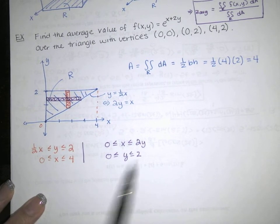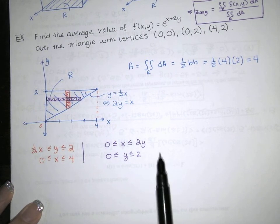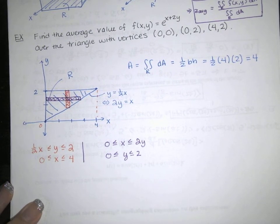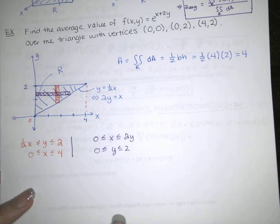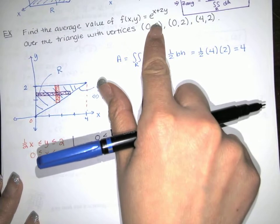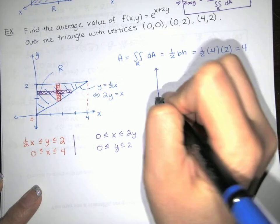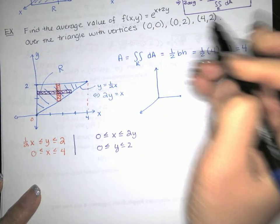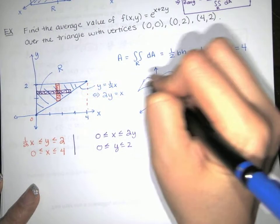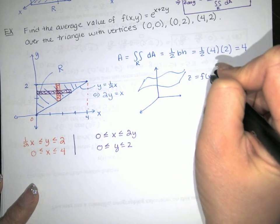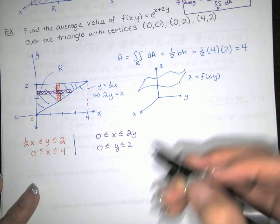We can use either set of bounds — both give pretty simple integrals. I'll use x from 0 to 2y and y from 0 to 2, since those bounds have more zeros. Let's find the volume under this exponential function above region R. As x gets larger, z grows exponentially; as y gets larger, z grows exponentially. This is a triangle in the xy plane going up to y equals 2, and x goes to 4.